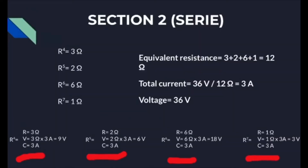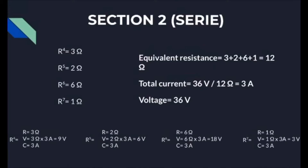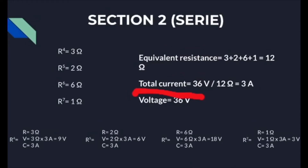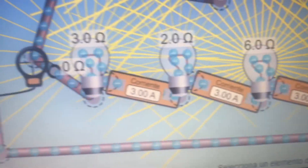In the series section, the voltage is going to change for each resistance. To calculate the equivalent resistance we simply add all the resistances, which gives a total of 12 ohms. Then the total current, which stays constant for each resistance, is calculated by dividing the voltage by the equivalent resistance, giving us 3 amperes — which matches the simulation.